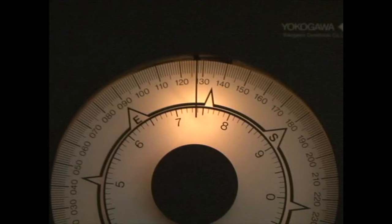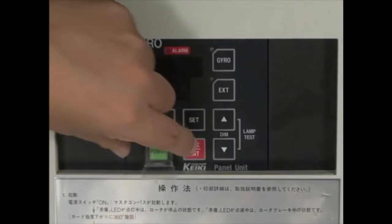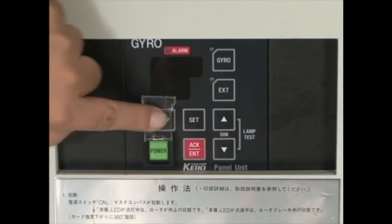The gyro compass's main function is to indicate true north and continuously output azimuth signals. Here we'll look at the method of starting and stopping the gyro compass and error correction.